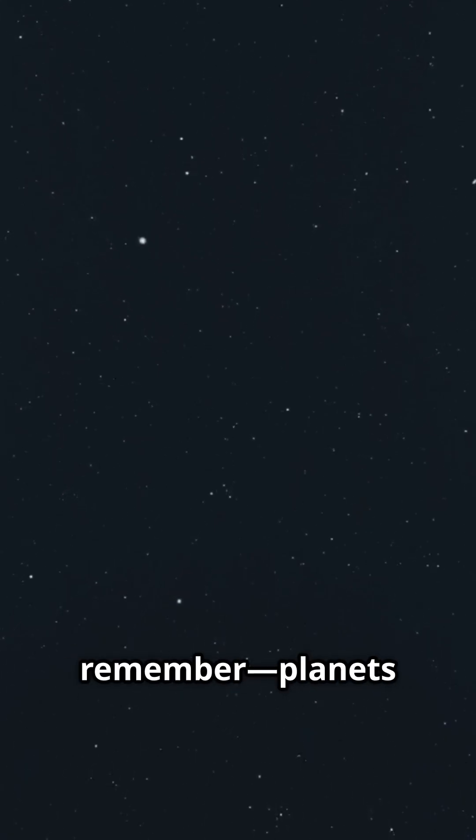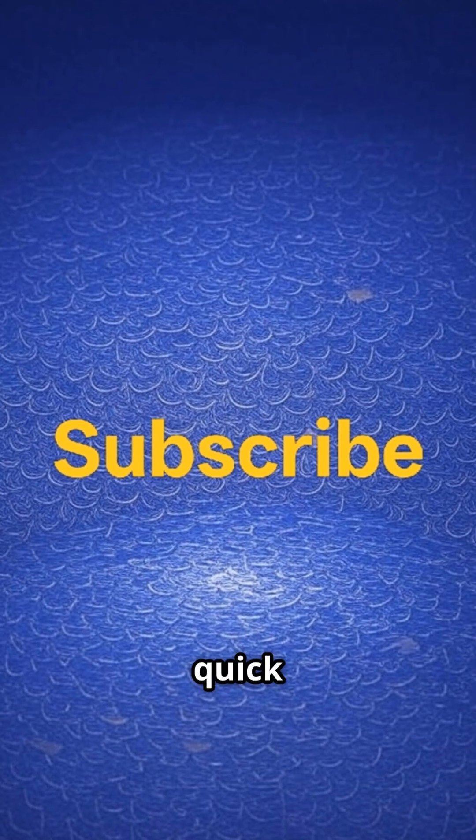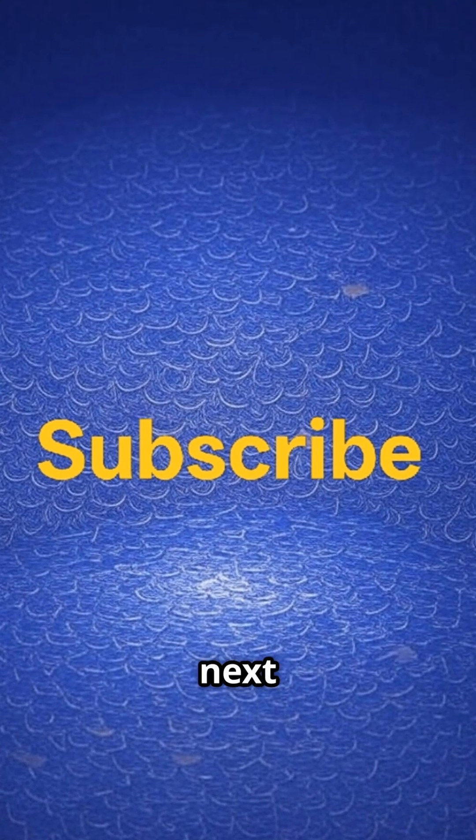So, next time you look up at the night sky, remember, planets don't always follow the rules. Their wild spins are clues to the dramatic events of our solar system's past. Subscribe for more quick science answers. See you next time.